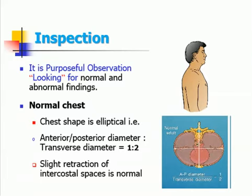Inspection is a purposeful observation or looking for normal and abnormal findings. Inspection of the chest is started with inspecting the shape of the chest. Normal chest shape is elliptical, i.e., the antero-posterior diameter to transverse diameter ratio is 1:2. Slight retraction of intercostal spaces is normal.